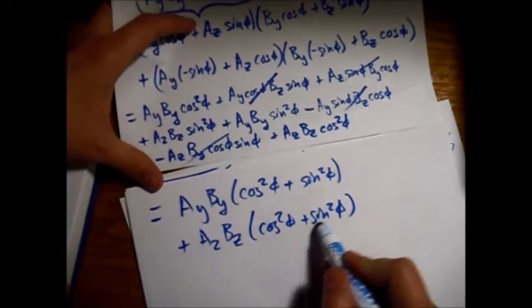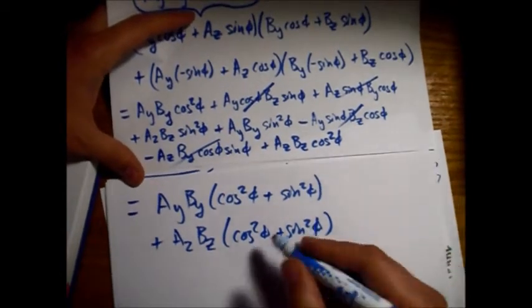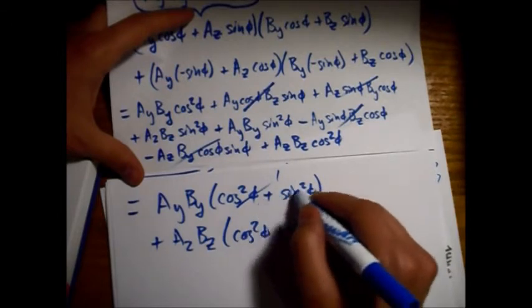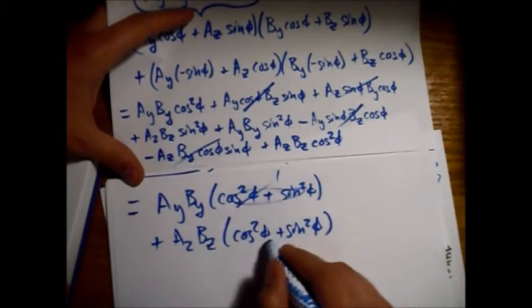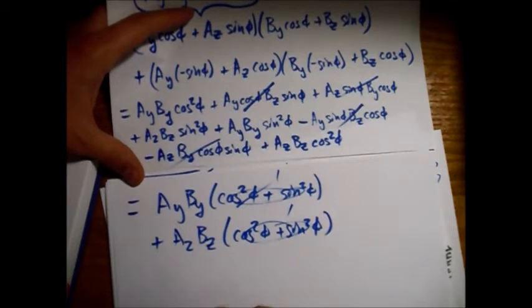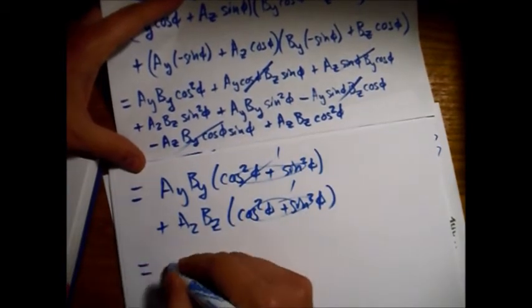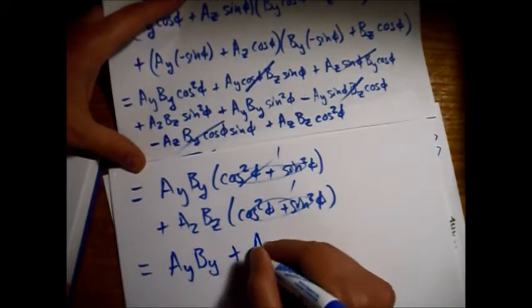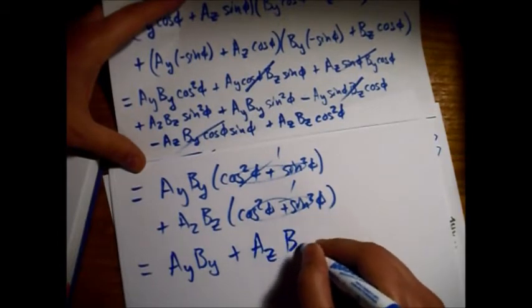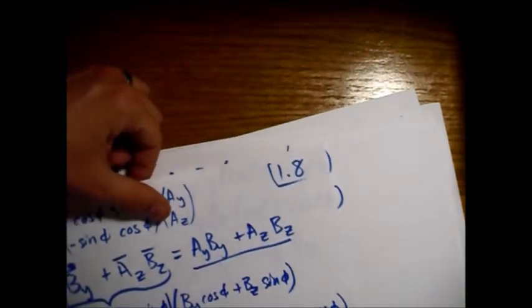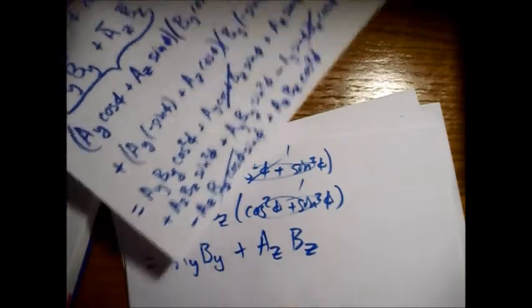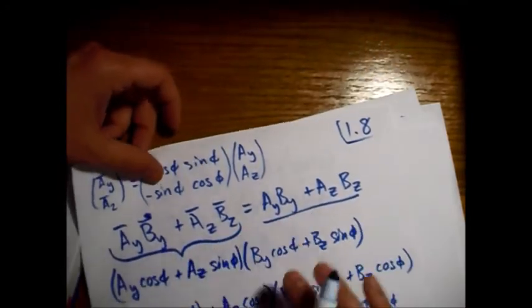Alright. Now, sine squared plus cosine squared is equal to 1. So this is 1. This whole term is 1. This whole term is 1 as well. Equals A_y B_y plus A_z B_z. Which is right here. A_y B_y plus A_z B_z. We've just proved this statement.